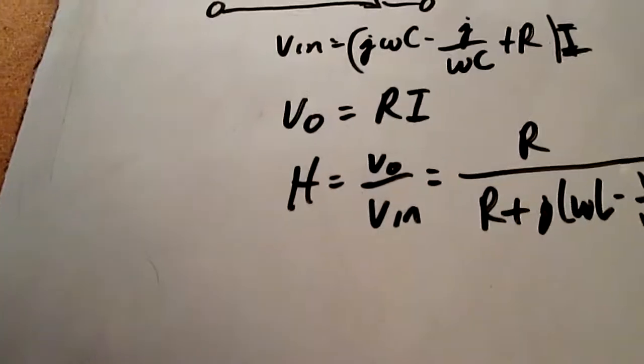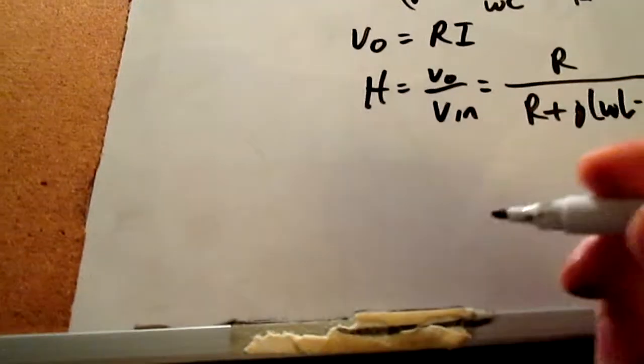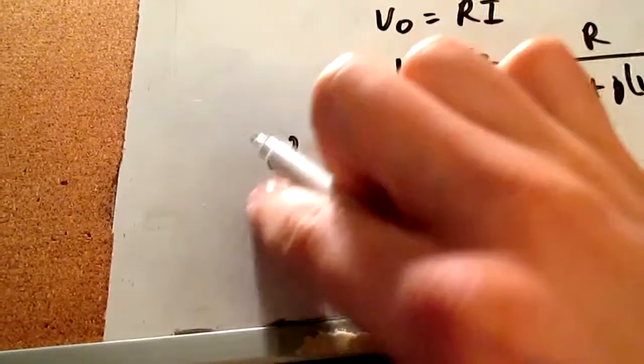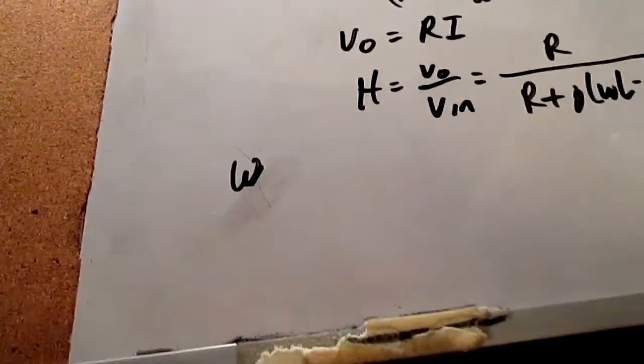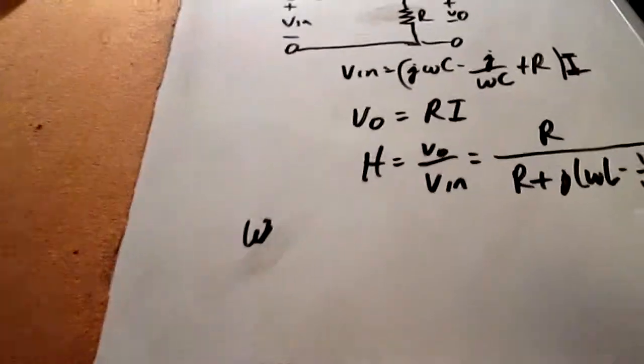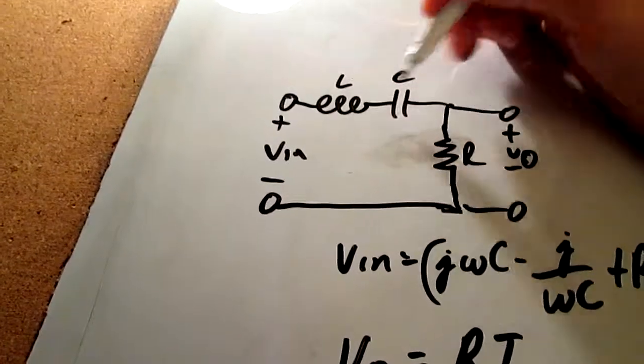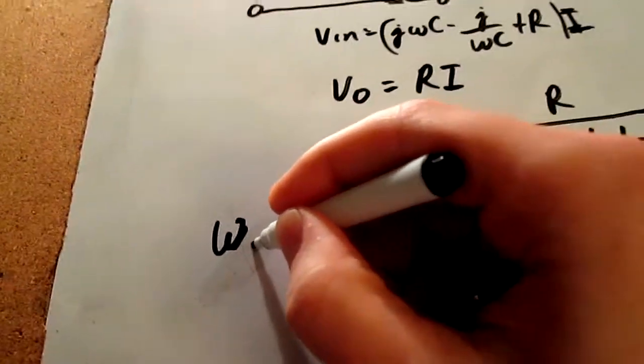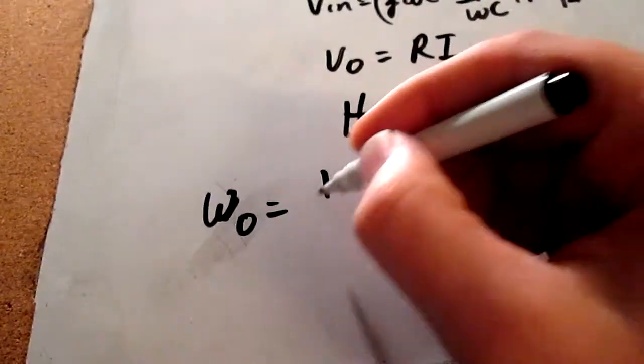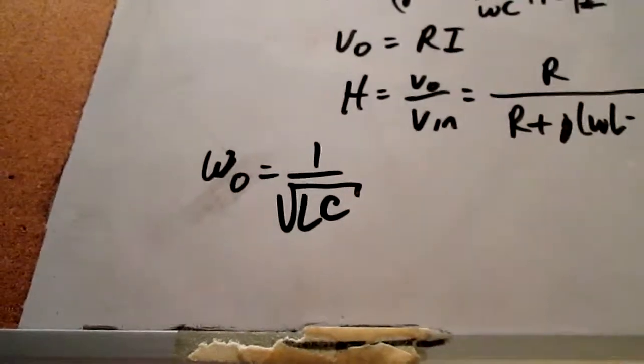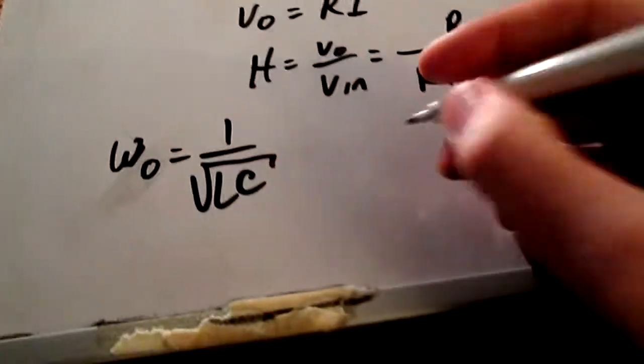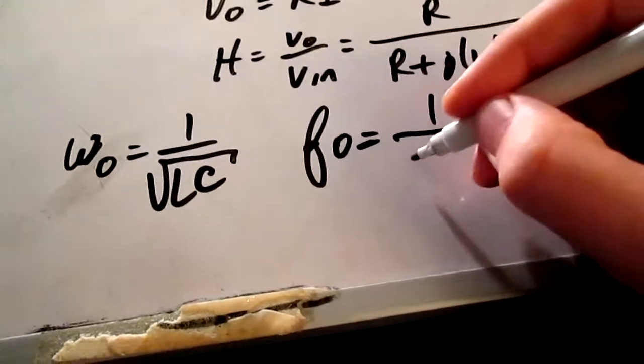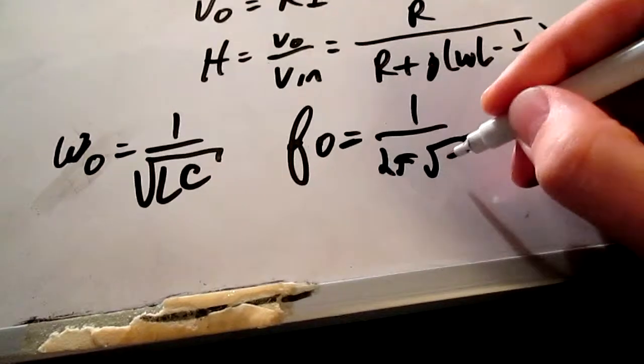It's really important to know the resonant frequency. This is like the number one. The resonant frequency of a band-pass filter, or any filter that has an LC component, one LC component, is going to equal one over square root of LC. So we know that the center frequency is going to equal one over two pi square root of LC.